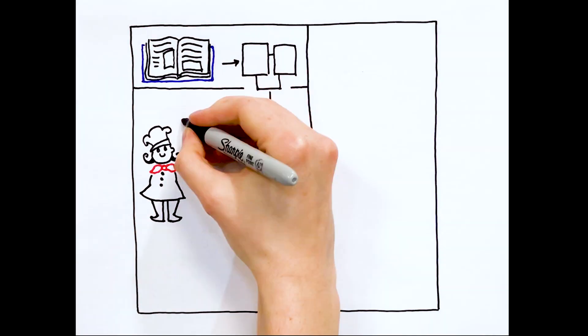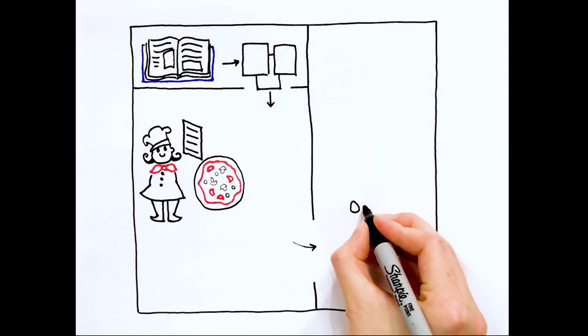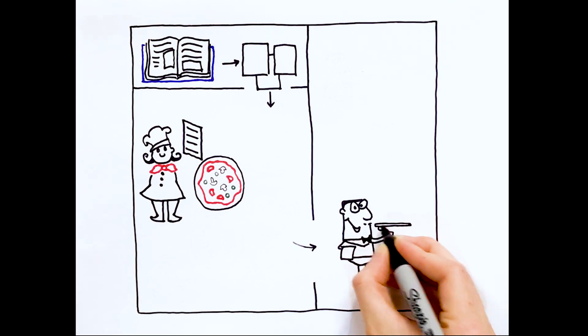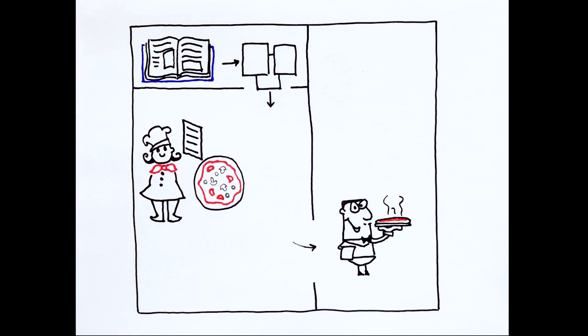The chef takes the recipe and makes the meal. The server puts the orders together and brings them out to the dining area. The recipes the owner copies depends on the menu of the restaurant.